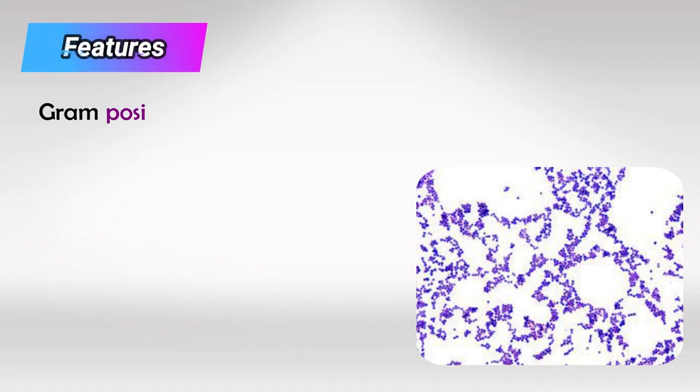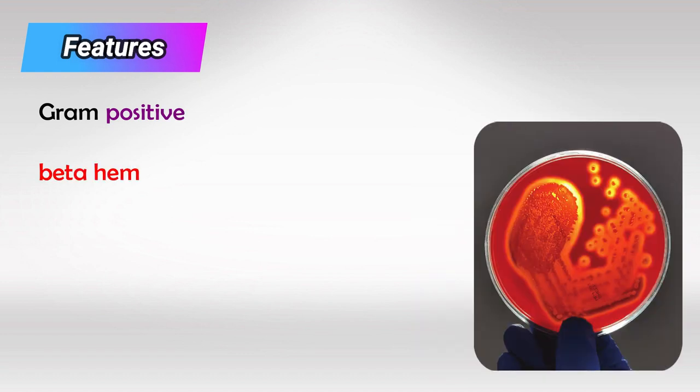The bacteria is gram positive which is why it's purple when staining. It is beta hemolytic which means when you put the bacteria in a blood agar it will completely dissolve the blood.